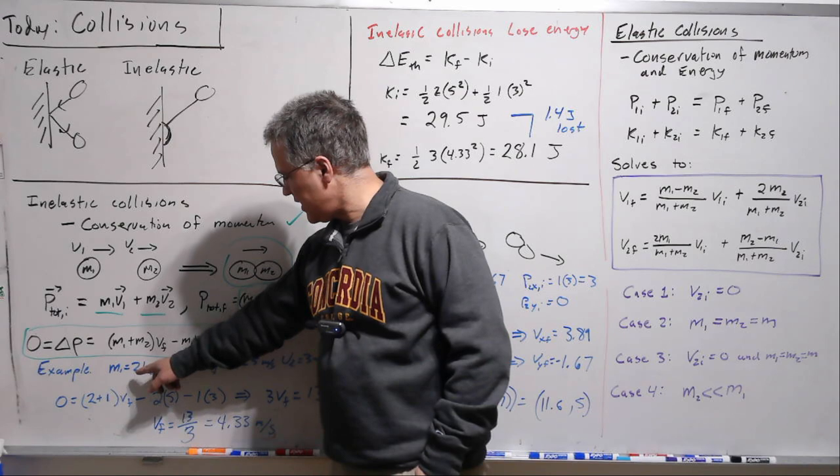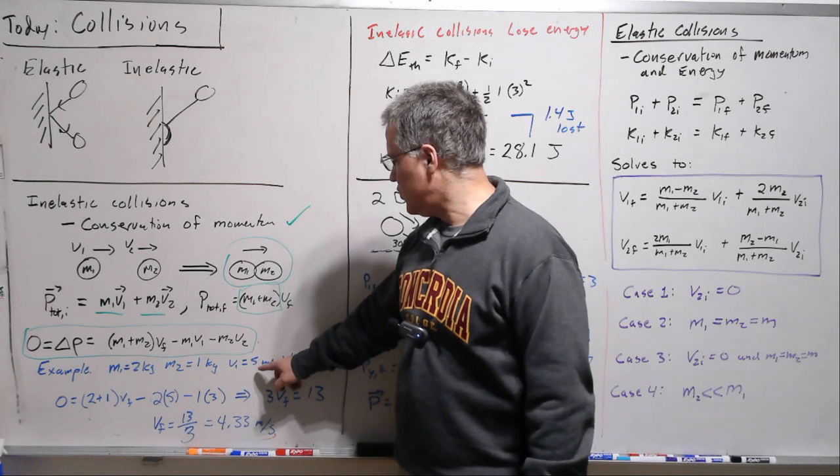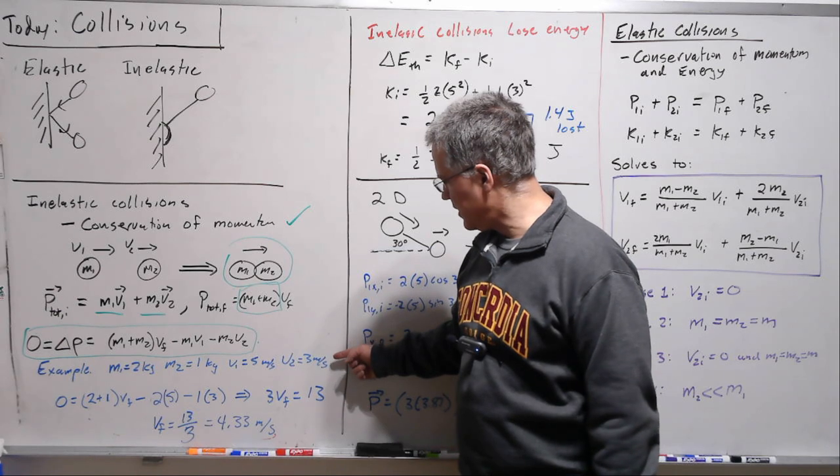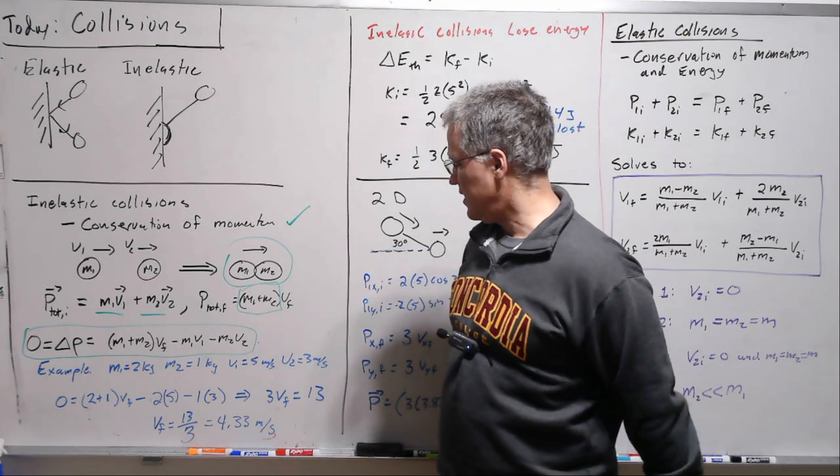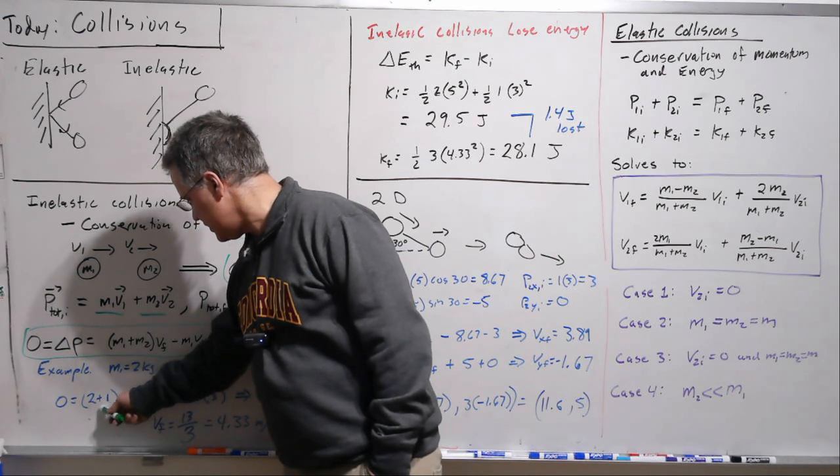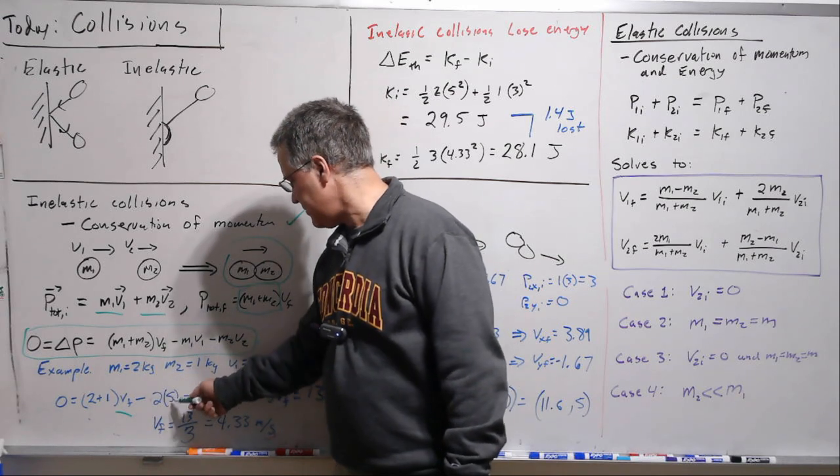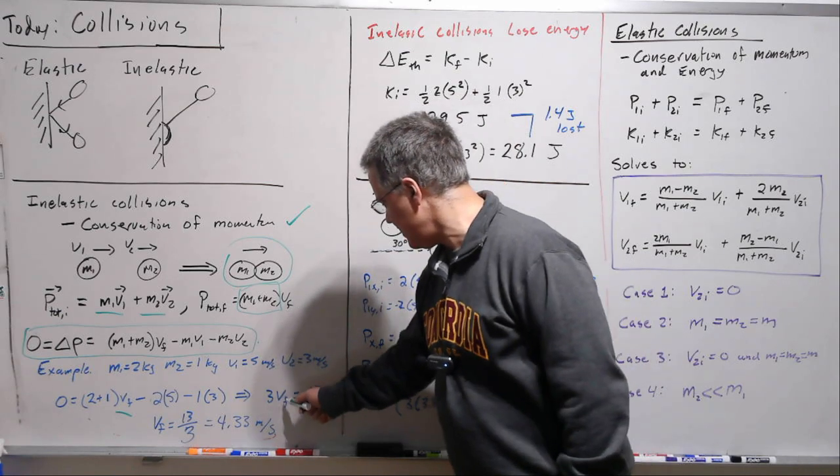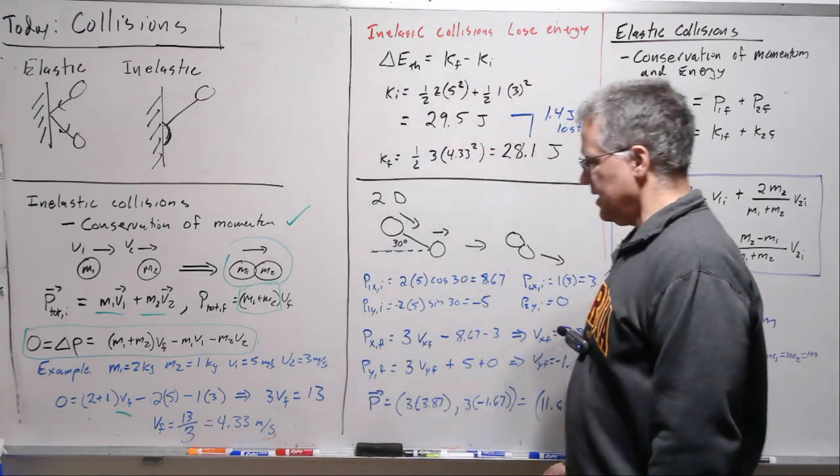So let's take an example. Say we've got a 2 kilogram mass, a 1 kilogram mass, they collide and stick together. The 2 kilogram mass is moving at 5 meters per second. The 1 kilogram mass is moving at 3 meters per second. Let's calculate the final velocity of the unit that's stuck together. So m1 plus m2 times the final velocity, we don't know this, that's what we're going to solve for, minus 2 times 5 minus 1 times 3, well that gives us 3 v final equals 13 or v final equals 13 thirds meters per second.